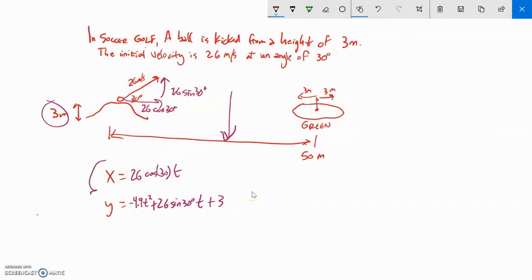Here's our parametric equation that shows this relationship. Now the question is: if it's kicked like this, is it going to hit that green? My question is just, is it going to bounce on the green?